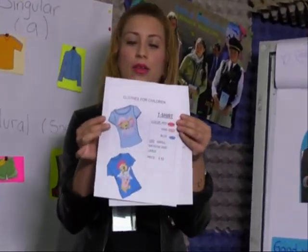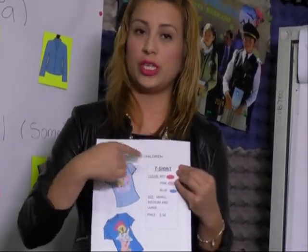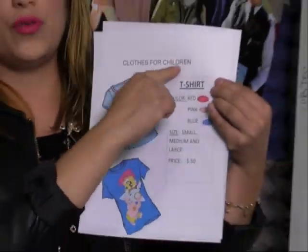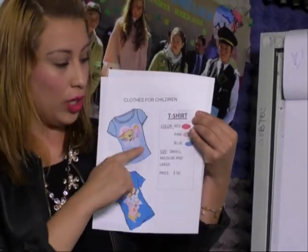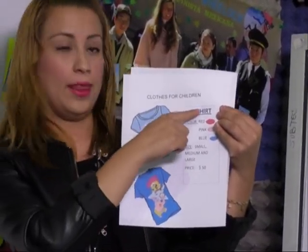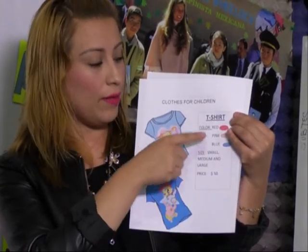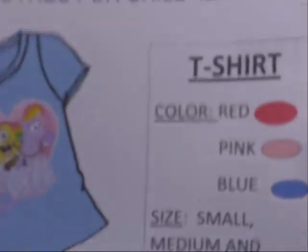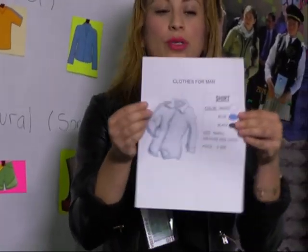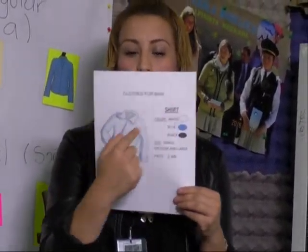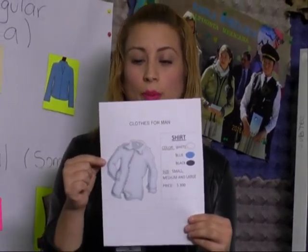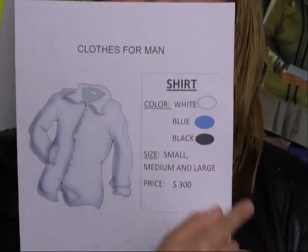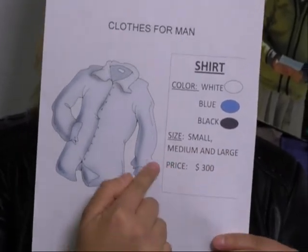Aquí tenemos otro ejemplo, pero este es para children. We have some t-shirts — aquí tenemos playeras, pero estas son clothes for children. Is the same: we need to put the name — t-shirt; the colors — we have an example: red, pink, blue; the size — small, medium and large; and the price. Y por último, we have an example for clothes for men. Aquí tenemos algún ejemplo de las prendas para ropa de hombre. Example: a shirt. Lo mismo colocamos: color — white, blue, black; the size — small, medium and large; and the price.